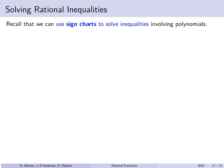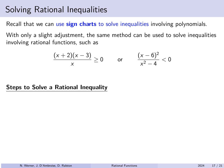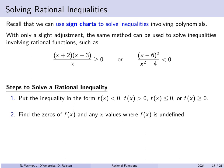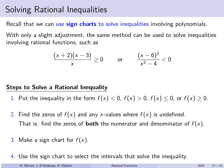When solving polynomial inequalities we can use sign charts, and with only a small adjustment the same method can be used to solve inequalities involving rational functions. To solve a rational inequality: first, flush everything to one side to get a single rational function being compared to 0. Then find the zeros of the function — zeros of the numerator give zeros of the function, zeros of the denominator give places where the function is undefined. Then make a sign chart for f of x using the same general technique used for polynomial inequalities.